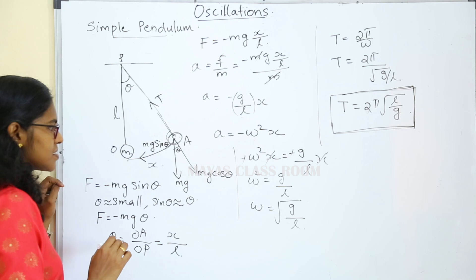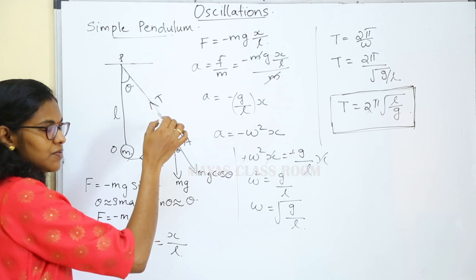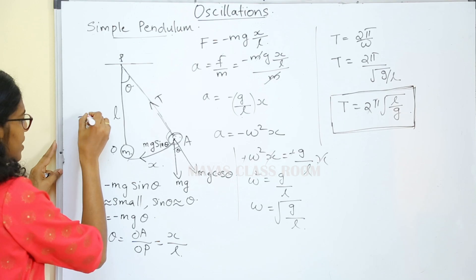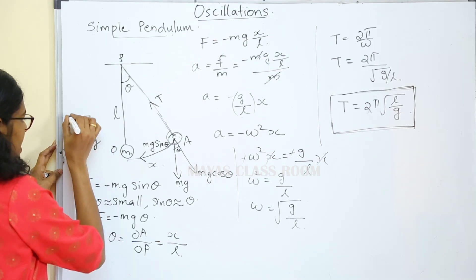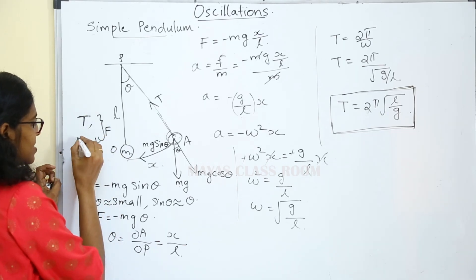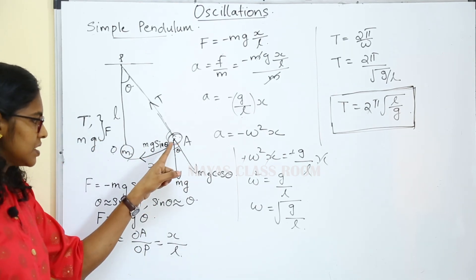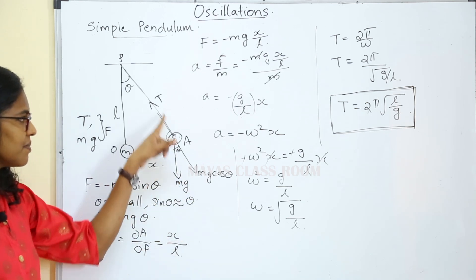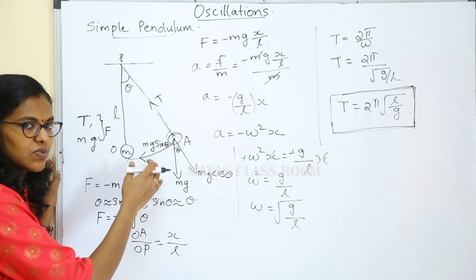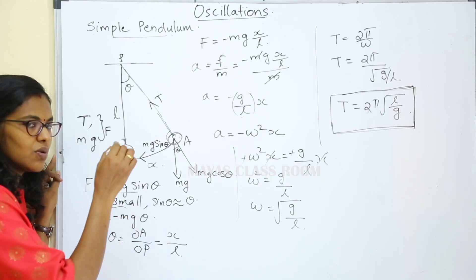The force acting on the bob is weight W equals mg, and the tension acts along the string. These are the two forces. We resolve them into a tangential component and a radial component. The radial component and tension cancel. The unbalancing force is the restoring force. The condition is that the oscillation angle is small, so sin theta is approximately equal to theta.